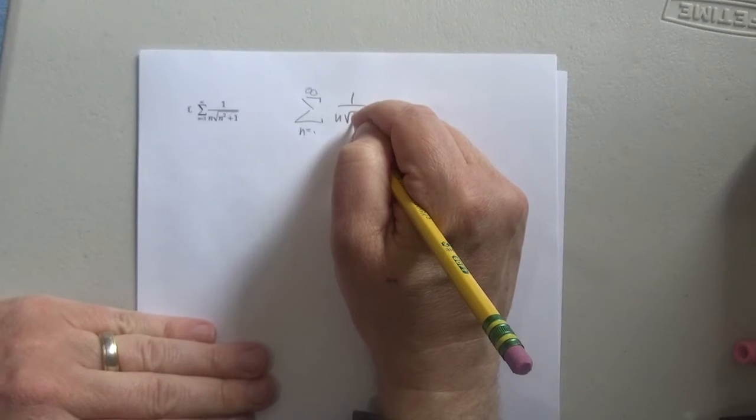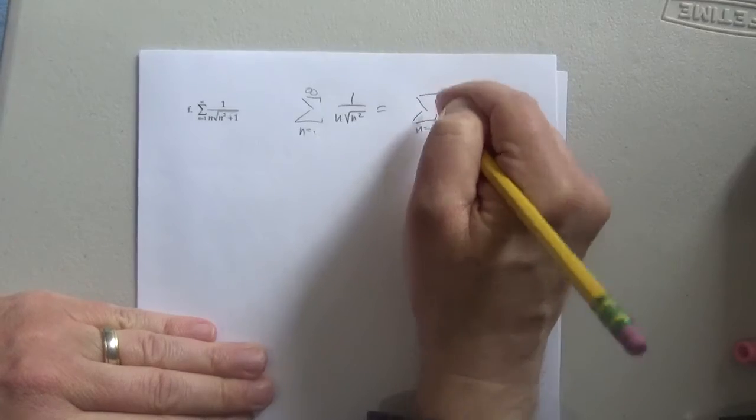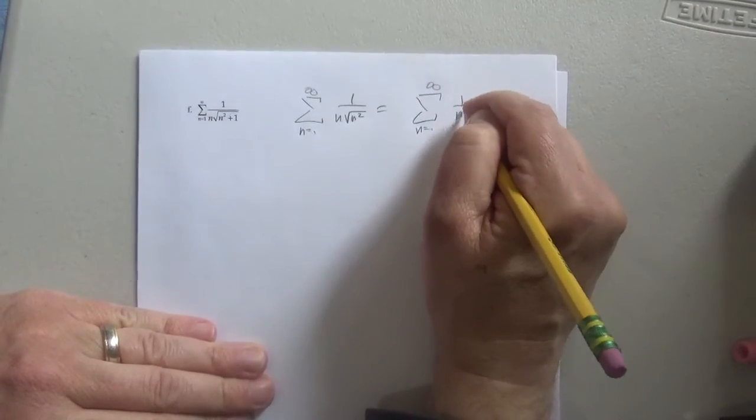The square root of n squared is n, so I really just end up having, I can write equals here, n equals 1 to infinity of 1 over n squared.